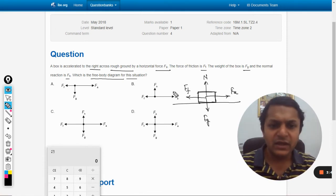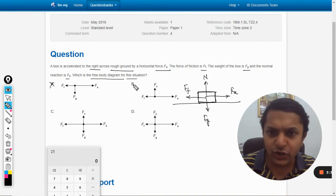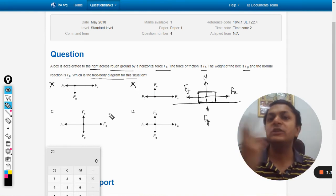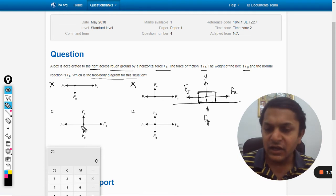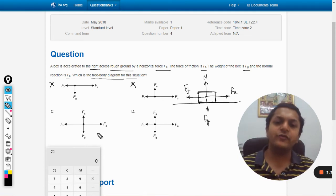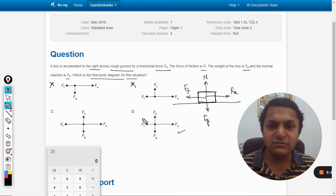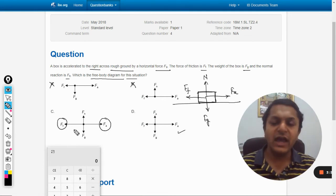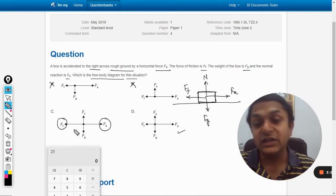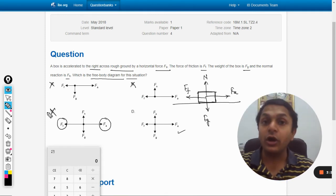This question becomes very easy by watching this: all four forces will be there. So option A is wrong and option B is wrong because there are only three forces. The fourth one is not there in C. We are having four forces in both C and D, but Fa is more in D and Fa is equal to Ff in option C.